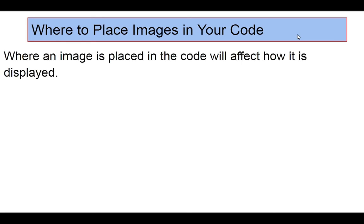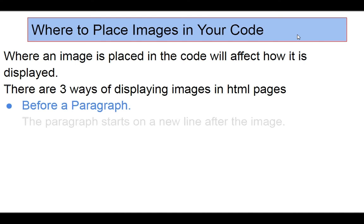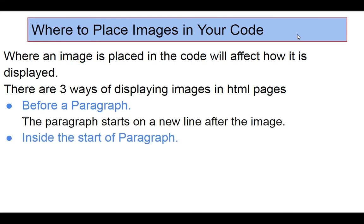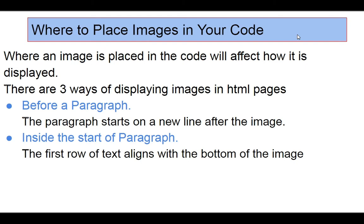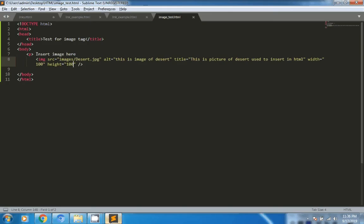If you place an image tag in a different location, it will affect the display. There are three ways of displaying images relative to a paragraph. First, before a paragraph — the paragraph starts on a new line after the image. Second, inside the start of a paragraph — the first row of text aligns with the bottom of the image. Third, in the middle of a paragraph — the image is split between the words of the paragraph.